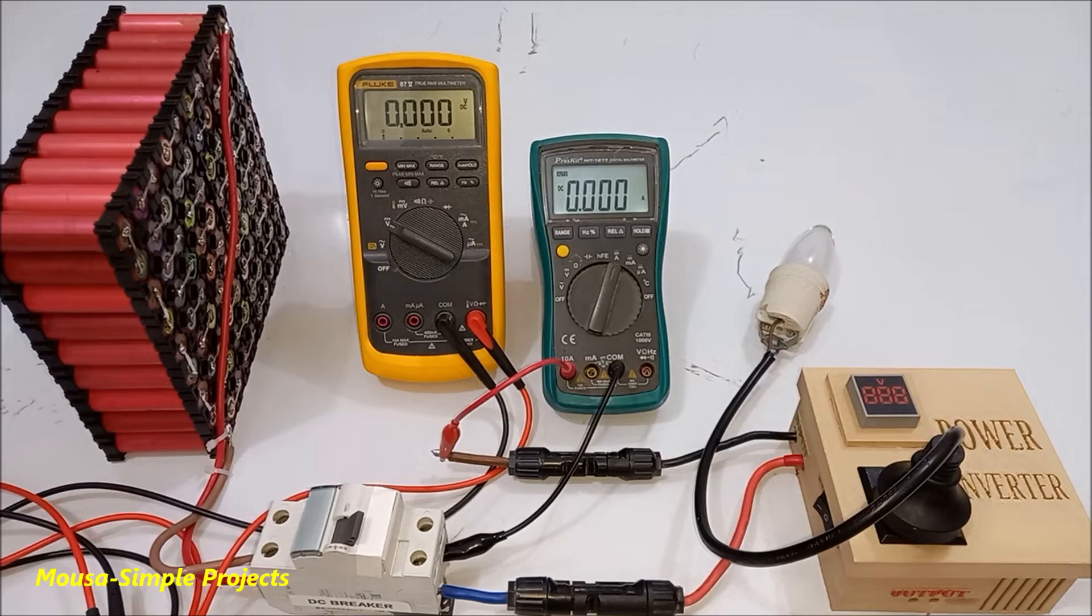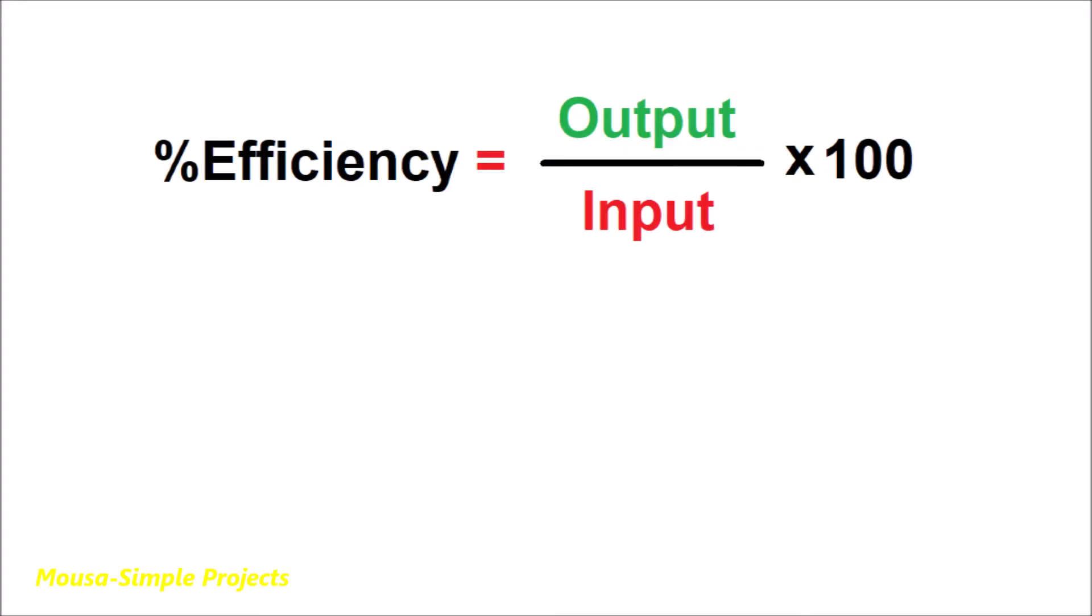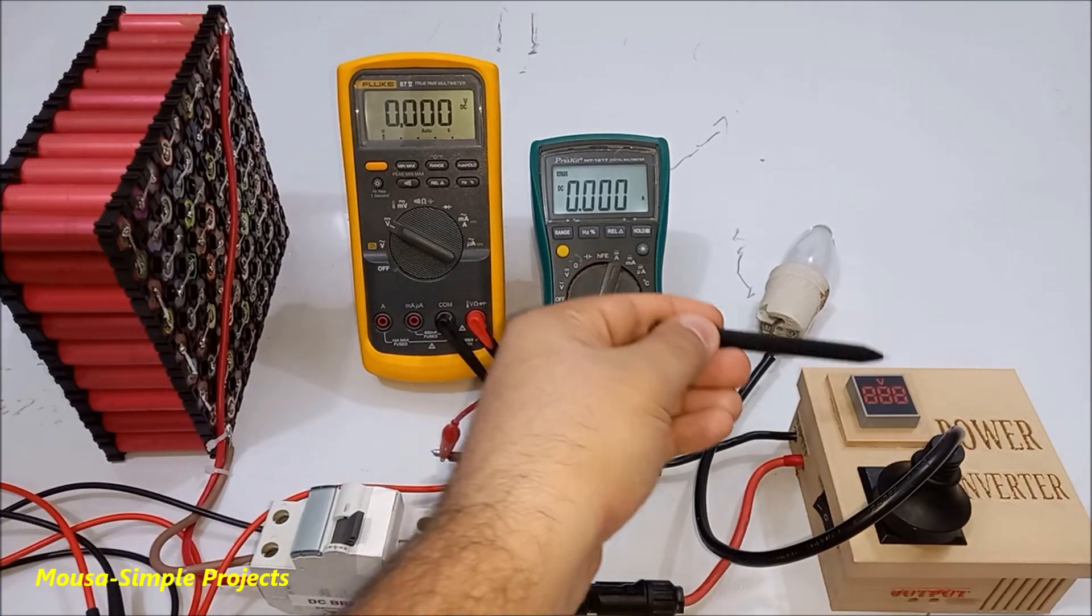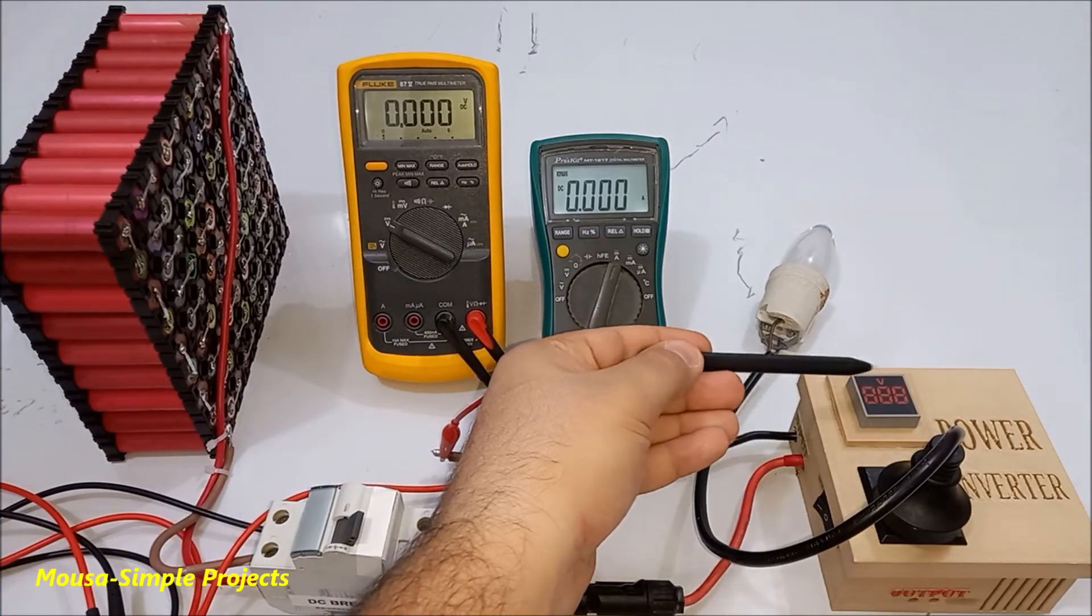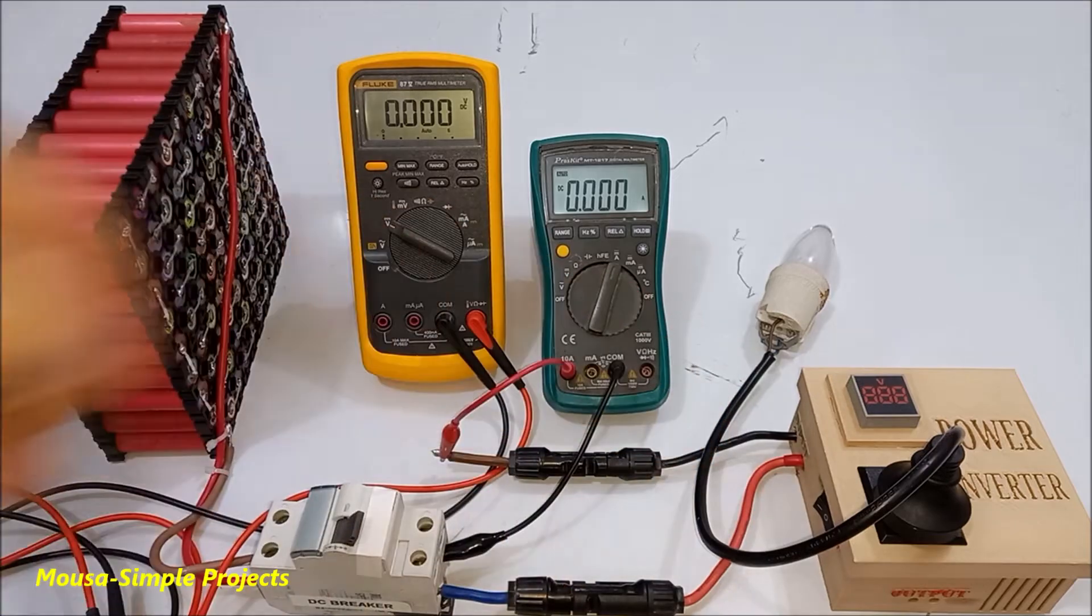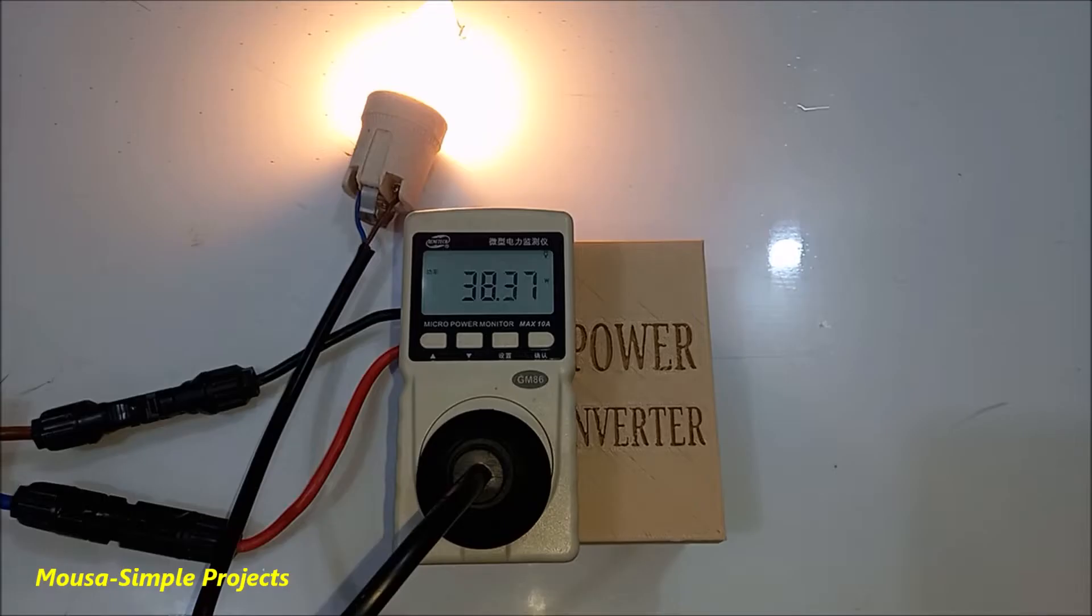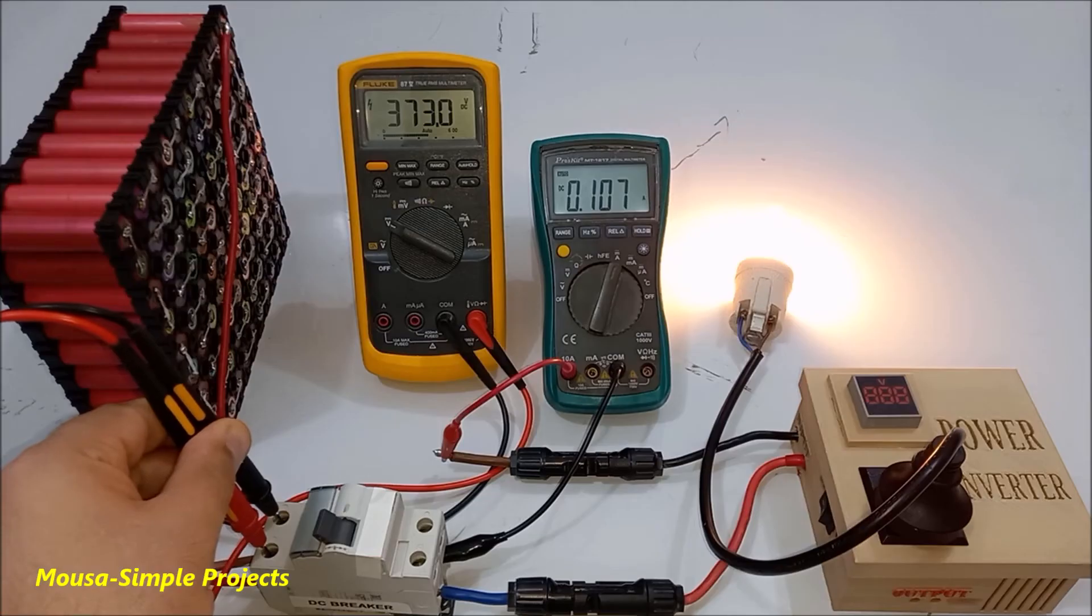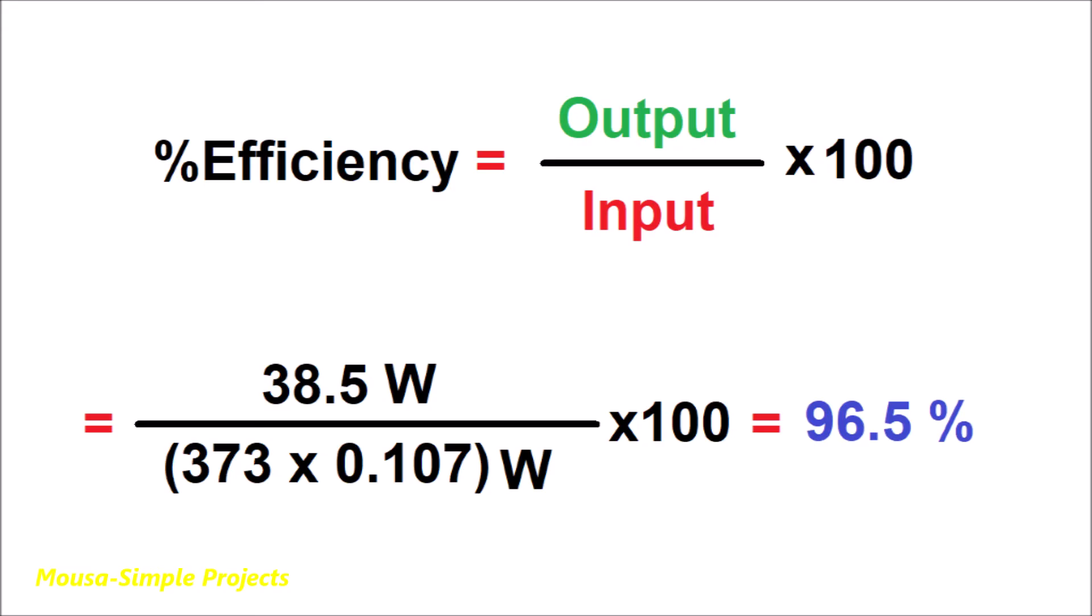Now let's see how much is the efficiency of this inverter. The efficiency is the output power divided by input power. To make the measurement precise, I disconnected the AC voltmeter because it wastes some power. The power consumption of this incandescent lamp is 38.5 watts. Divide this number by input voltage times input current. So the efficiency is 96.5%, which is excellent.